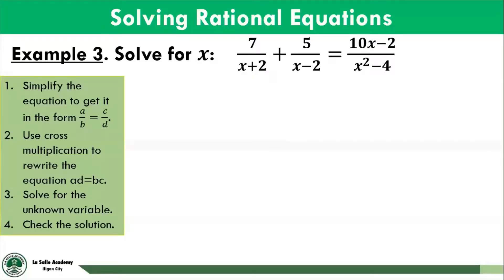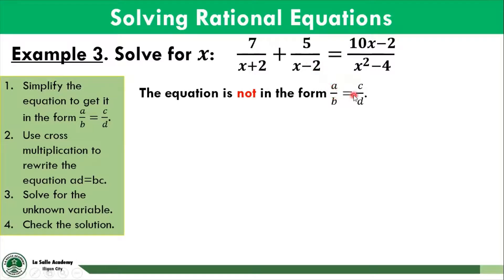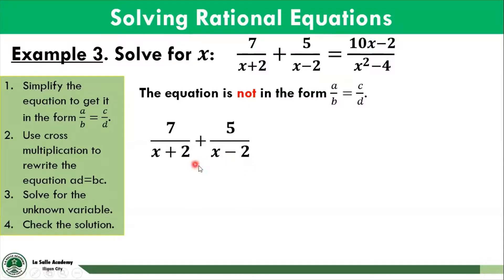For the last example, solve for x in: 7 over x plus 2, plus 5 over x minus 2, equals 10x minus 2 over x squared minus 4. Cross-multiplication can only be applied if a single fraction exists on each side. As observed, the left-hand side has two algebraic fractions, so the equation is not in the form a over b equals c over d. We need to combine these two fractions into one. Since the denominators x plus 2 and x minus 2 are different and completely factored, we use both as our common denominator.